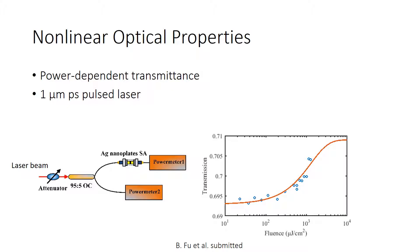In this case, a laser beam is split 95% to our silver nanoplates saturable absorber inserted in the fiber connector and 5% to a second power meter as a reference. Also in this case, we notice an increase in transmission by increasing the fluence of the laser.